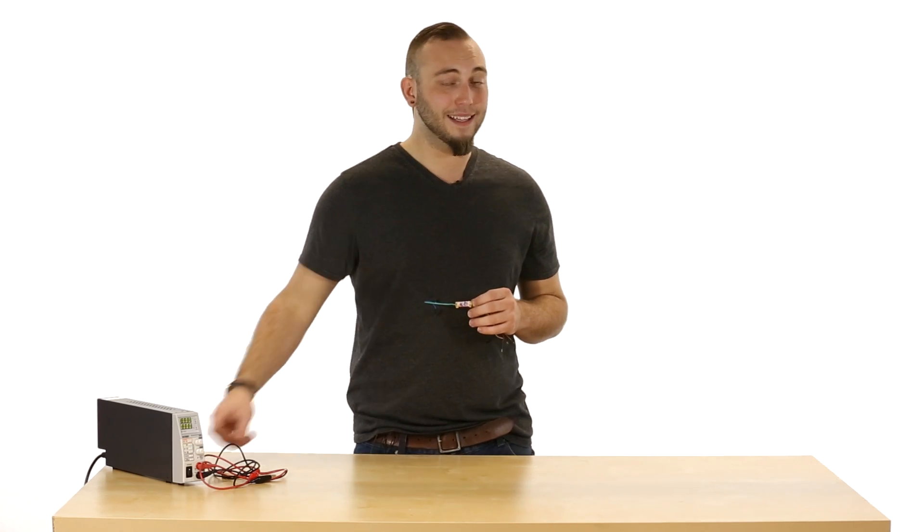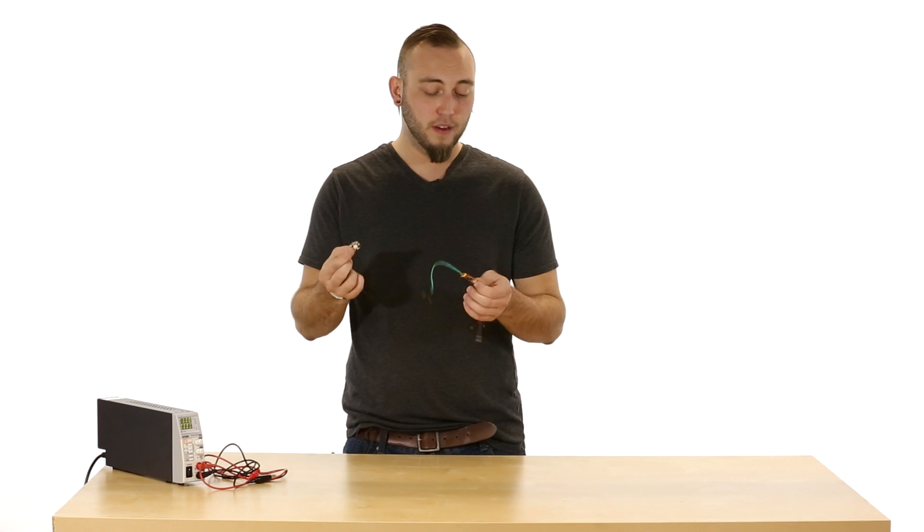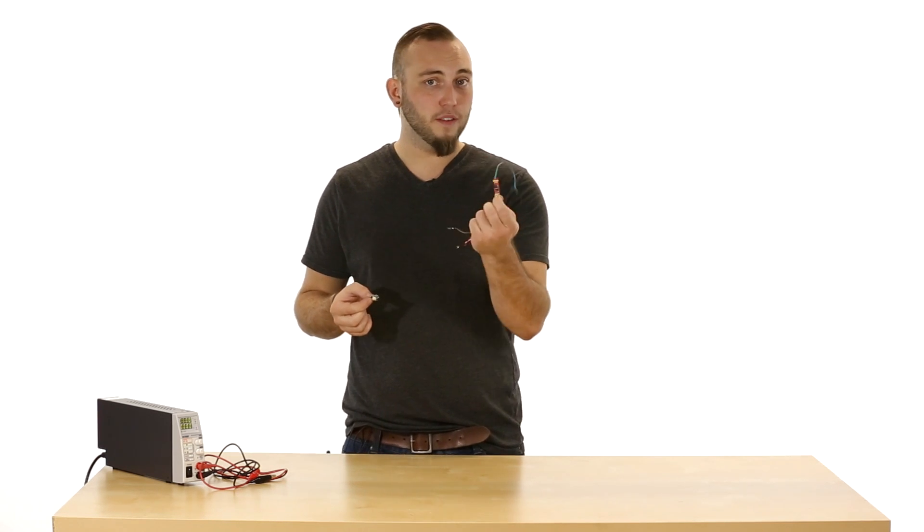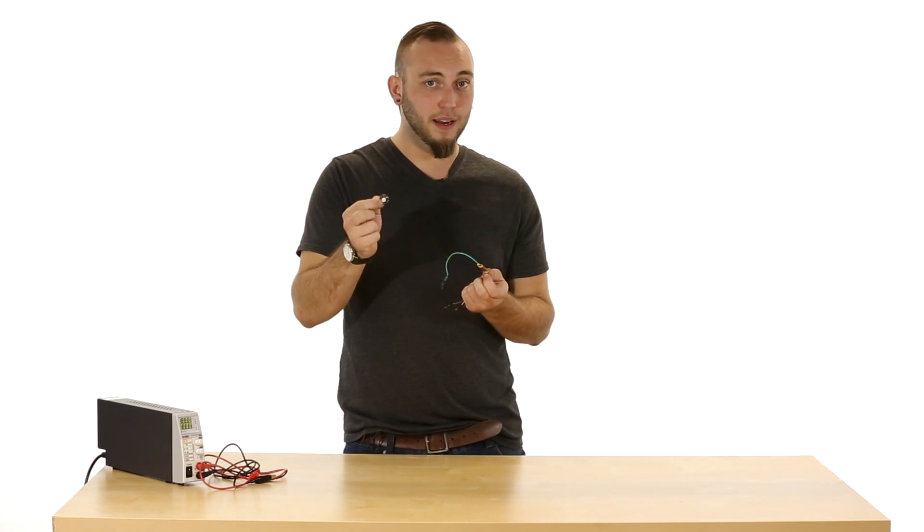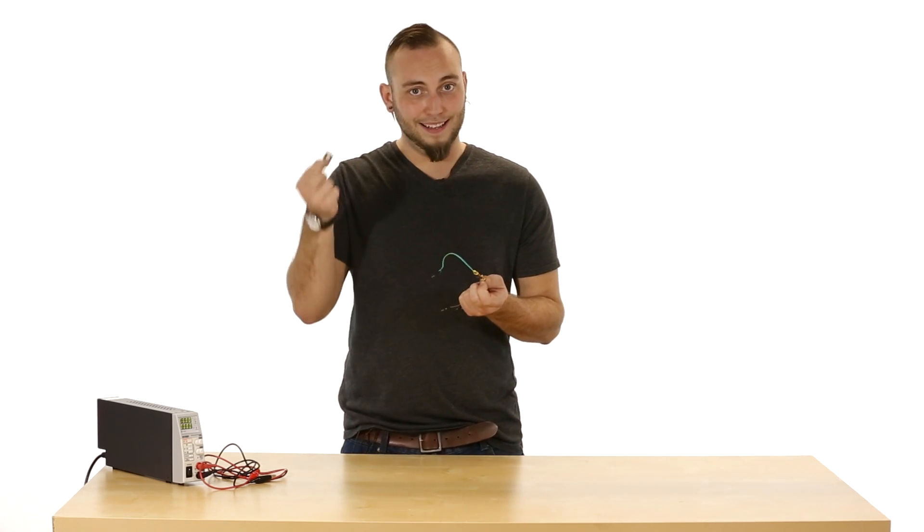These three watt LEDs, for instance, run at about 3.4 volts and you need to give this device at least 7 volts, but no matter what the voltage does coming into this, this will only get the right amount of current so you don't have to worry about your LEDs burning out.